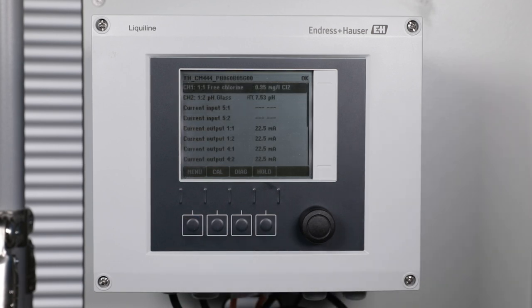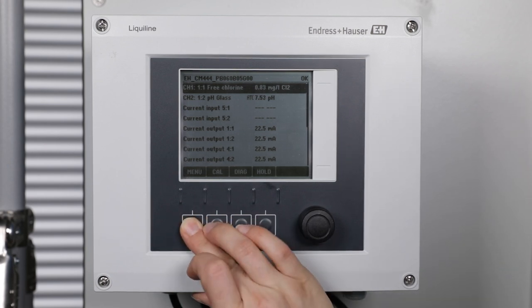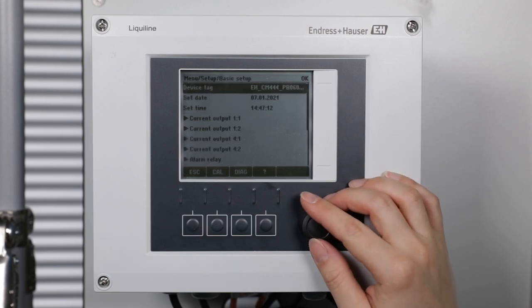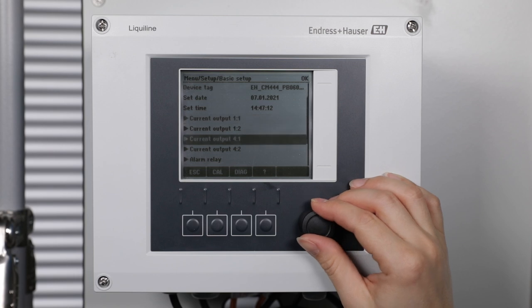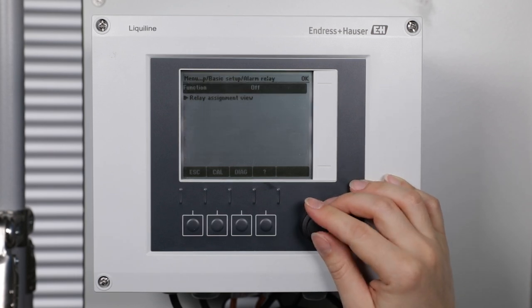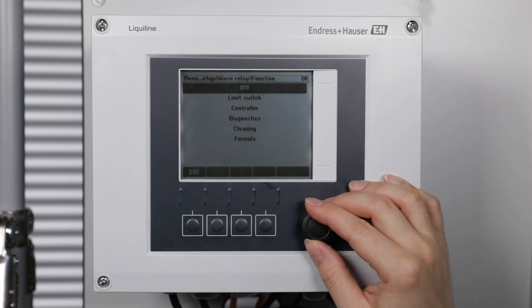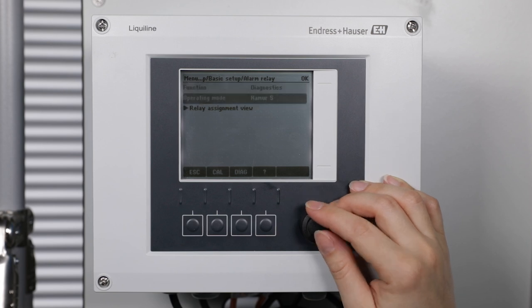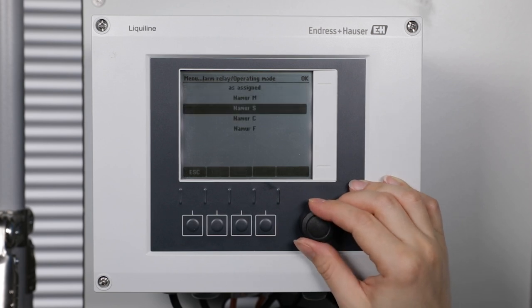Now the relay for the status indication light needs to be activated. When using the alarm relay, please check if the alarm relay has already been activated. In menu, setup, basic setup, alarm relay, its function needs to be turned on. It is a diagnostic function with operating mode NAMUA-F.